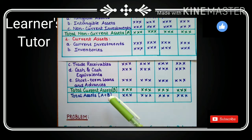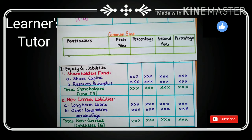This is the format of comparative balance sheet. Format of common size: we have particulars, first year percentage, second year percentage. No, particulars will be same. We will have equity and liabilities and assets. Particulars are same but we have first year and percentage, second year and percentage. Format is same but the method of solving is different.